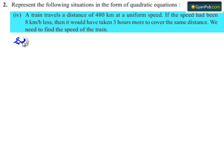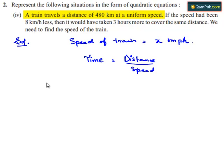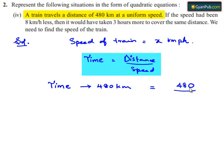Let us see the solution. Assume the speed of the train is equal to x km per hour. We know that time is equal to distance divided by speed. Therefore, the time taken to complete a distance of 480 km is 480 divided by x hours.